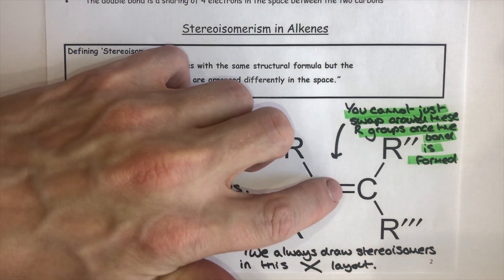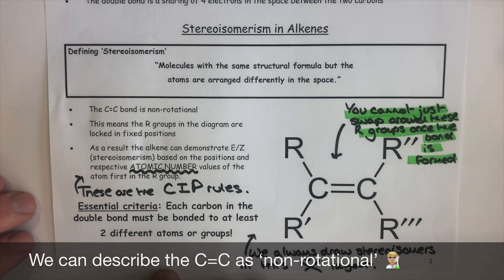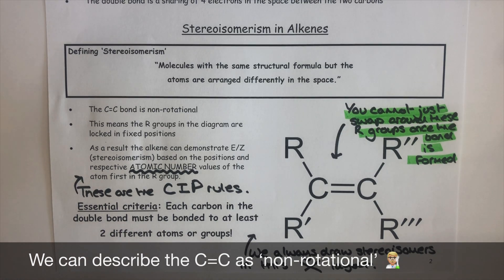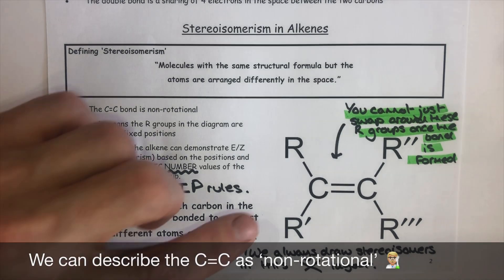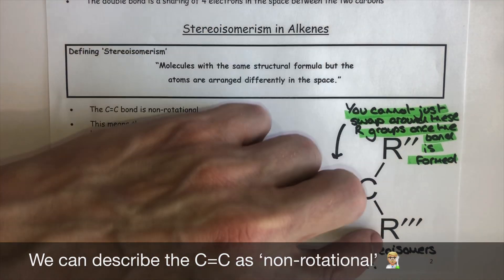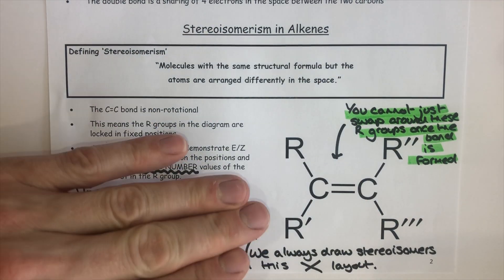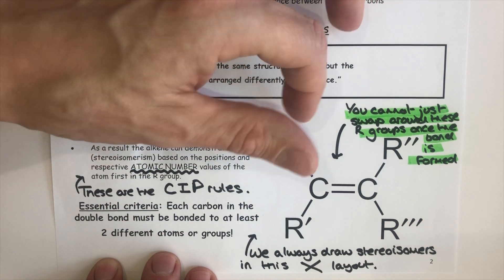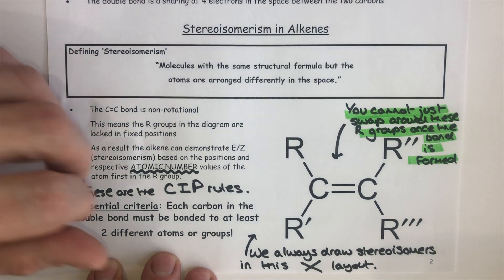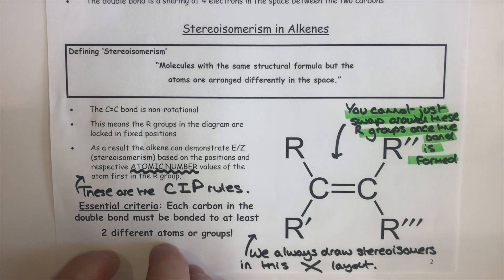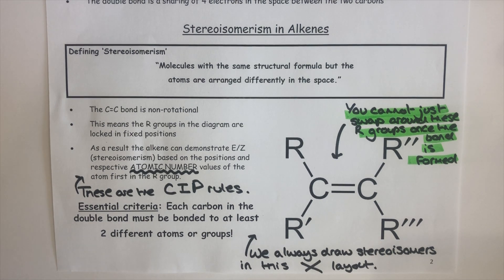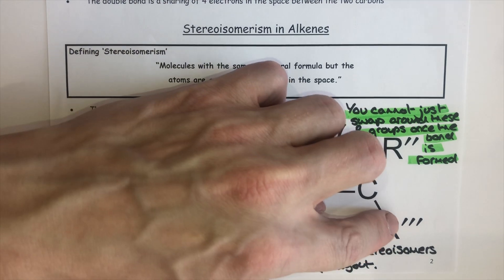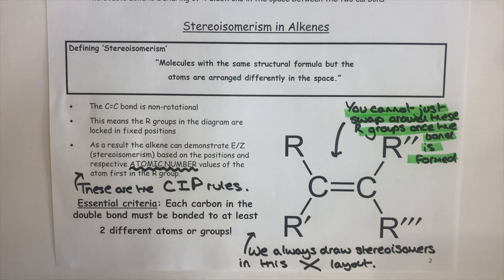Stereoisomerism starts because once the double bond has formed between two carbon atoms — once I've generated that sigma and that pi bond — the bond is locked into that position. I'm unable to spin the bond and swap around the groups. A normal sigma bond is rotatable, so a CH3 group on a single bond could be spun around freely, whereas a double bond, once formed, is locked. Stereoisomerism is all about the positioning of groups around the carbons in the double bond once that bond has been created.